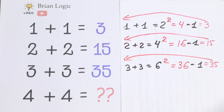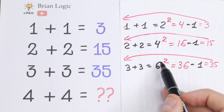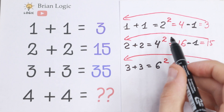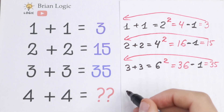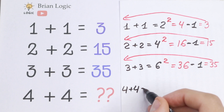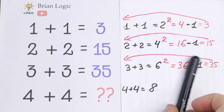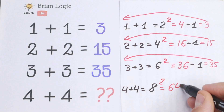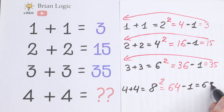I hope you see the pattern across all of these rows: add the two numbers, raise the sum to the second power, and subtract one. Let's apply these rules to our final case. Four plus four equals eight. Now we raise it to the second power: eight squared equals sixty-four. And we subtract one: sixty-four minus one equals sixty-three.